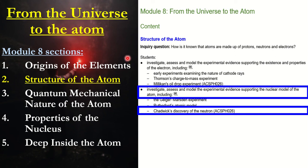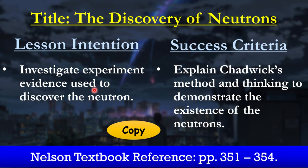Welcome back to the classroom. My name is Mr. Wong. Today we're going to be covering Module 8, From the Universe to the Atom, Inquiry Question 2, The Structure of the Atom. We're going to be investigating Chadwick's discovery of the neutron — looking at all the different experimental evidence that led to it, Chadwick's method, and the scientific laws he used to bring these ideas together.